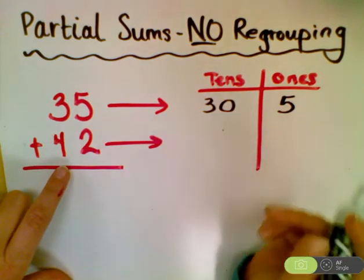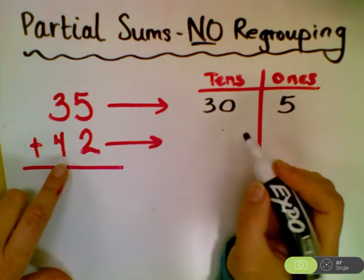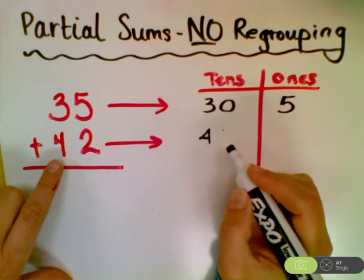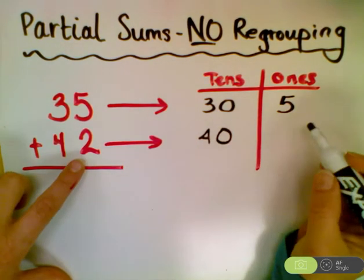For the second part of the problem, for 42, you ask yourself, how many tens are in 42? There are four tens. And 10 plus 10 plus 10 plus 10 equals 40. How many ones? There are two.